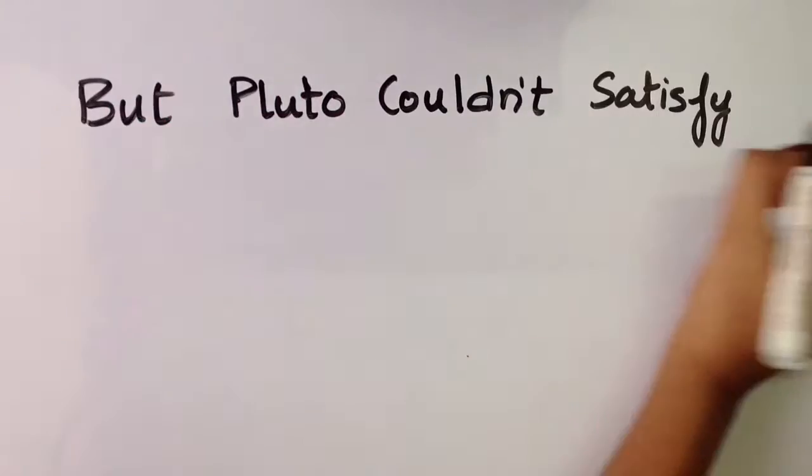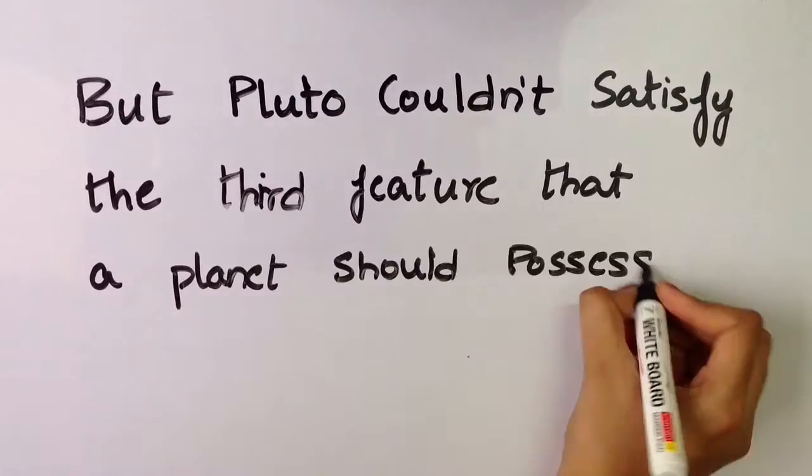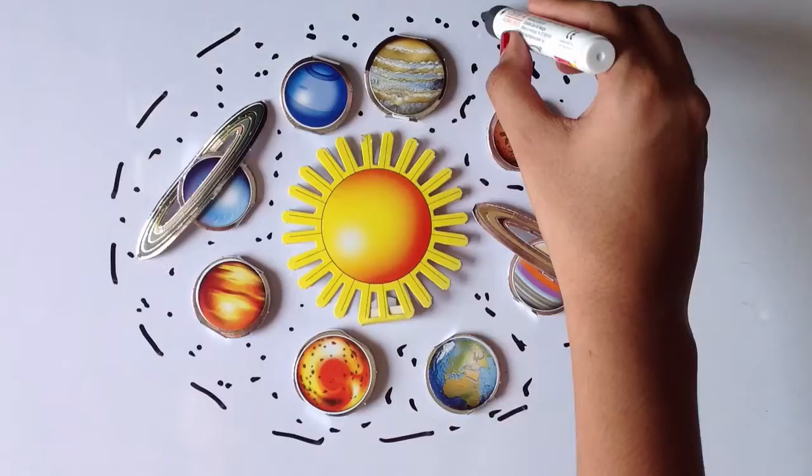It has cleared all the bodies in its surroundings, but Pluto couldn't satisfy the third condition. Why couldn't it satisfy the third condition?